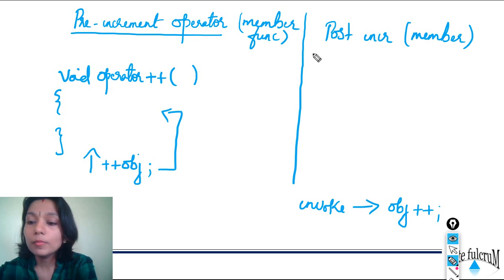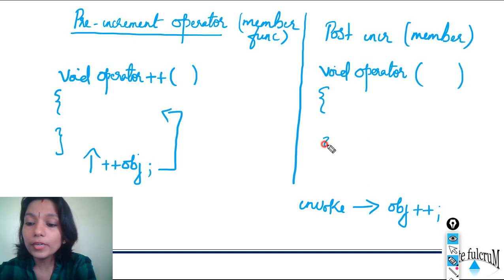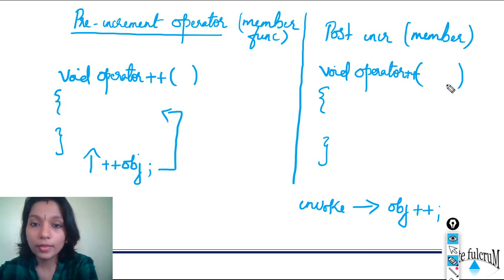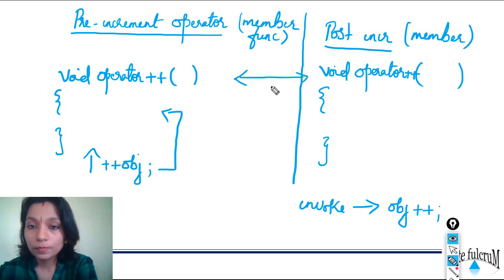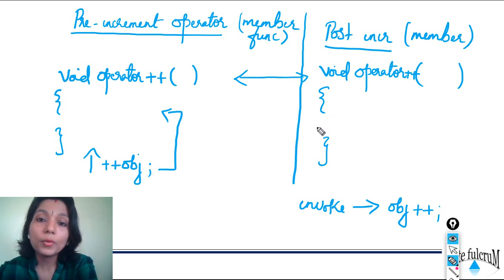Let's implement the post-increment function — say the return type is void and the function name is 'operator++'. But here's the problem: both pre and post increment use the same symbol plus-plus. If you follow the same rule of no arguments for a unary member function, how will you differentiate the two functions? You cannot redefine a function. So how do you resolve this ambiguity between pre and post?